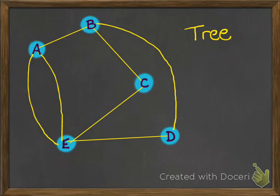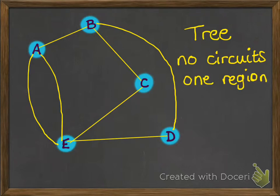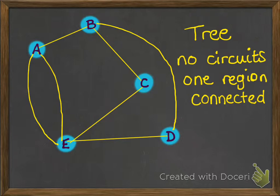Next we'll have a look at what a tree is. A tree has no circuits on it. It will then have one region because it's got no circuits to close off any other regions, but it's still connected — all the nodes need to be connected to the tree. So this one here we can see is not a tree, so we need to remove some edges to make it into a tree.